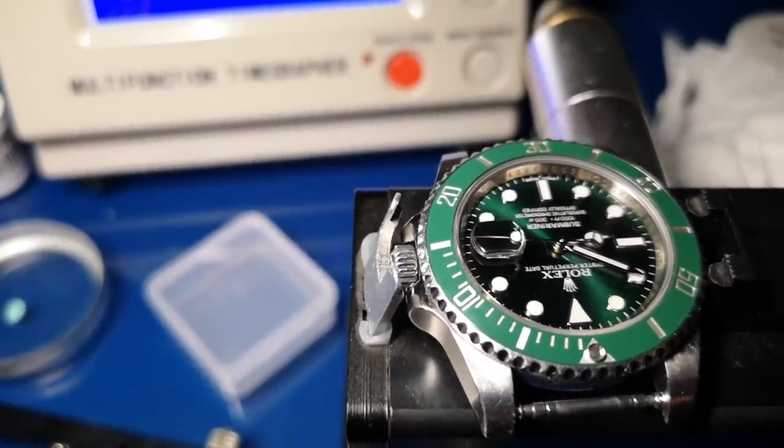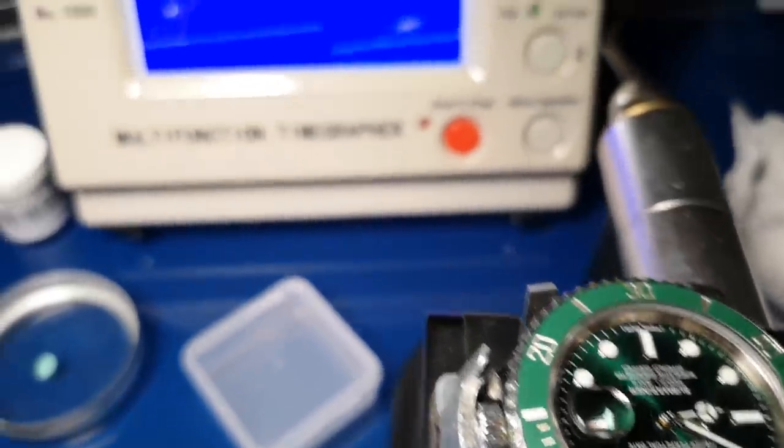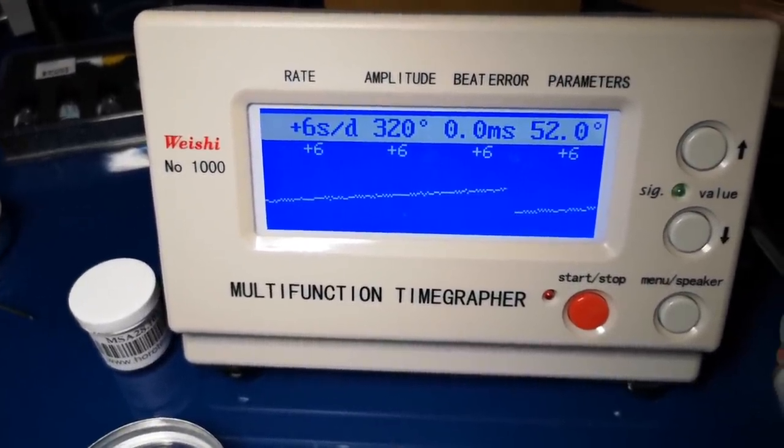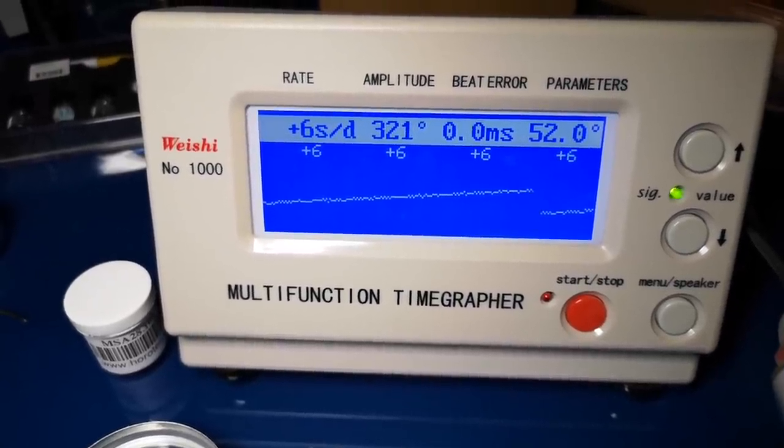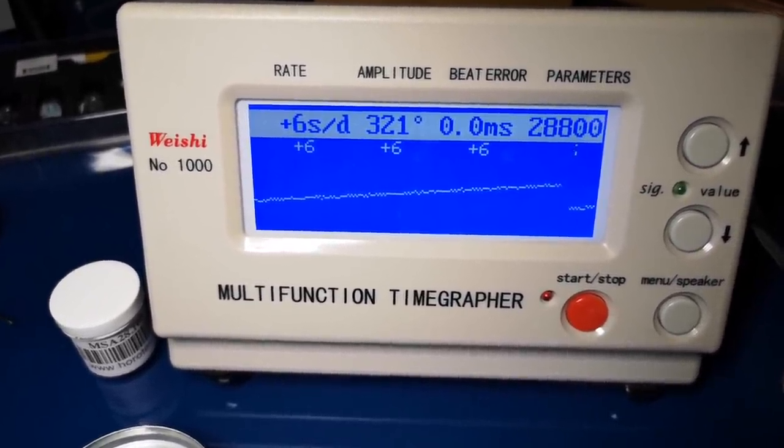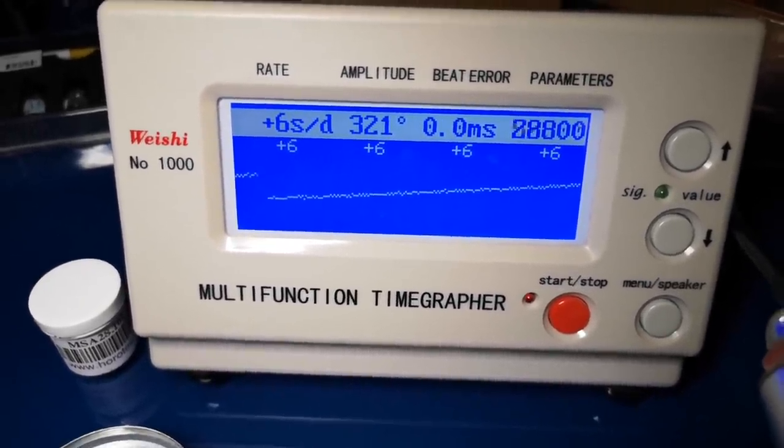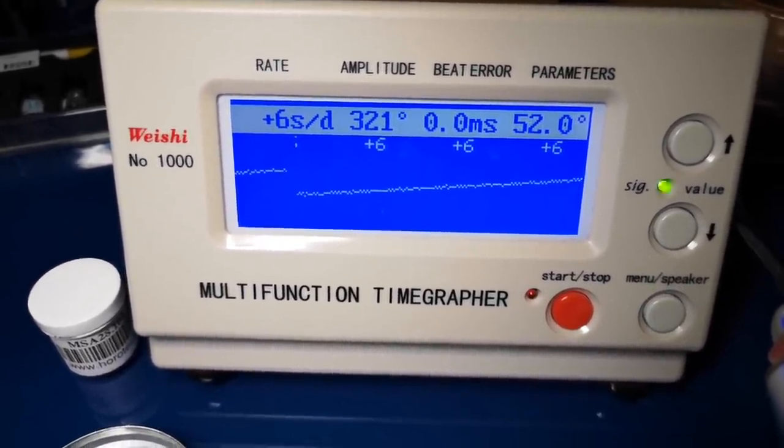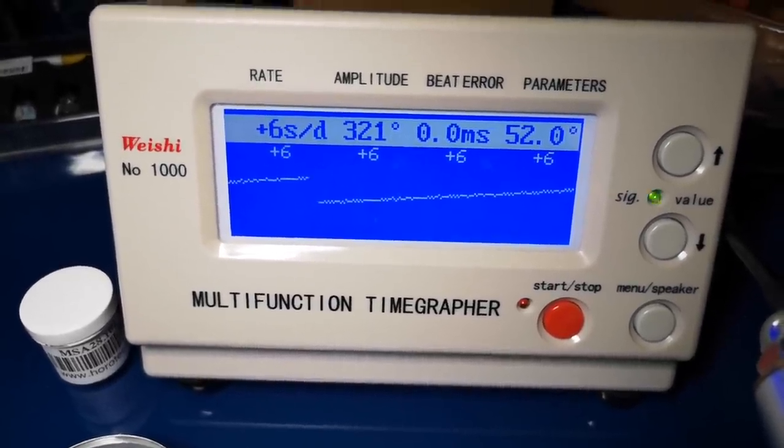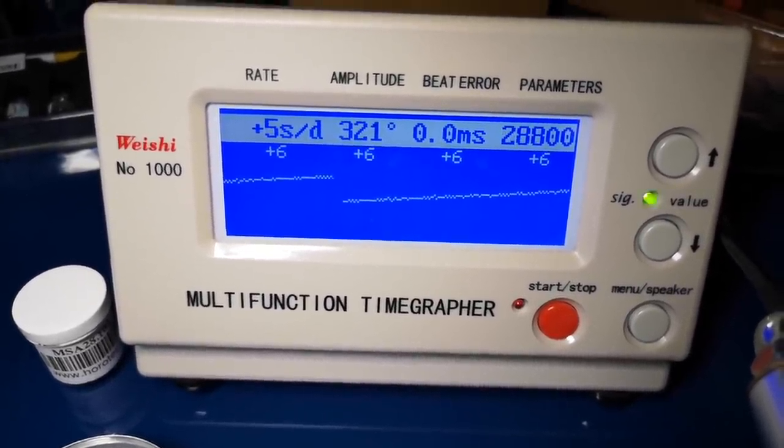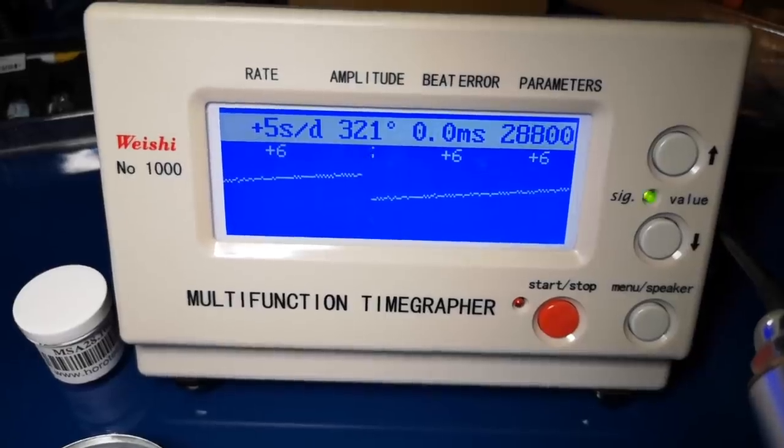And on the time grapher then after an initial regulation of the watch. And the important thing that you can see there is zero beat error and a really nice high amplitude of 321 degrees, which makes the job of doing the regulation over the next four or five days really meaningful. But we've only got to tweak it very very slightly.